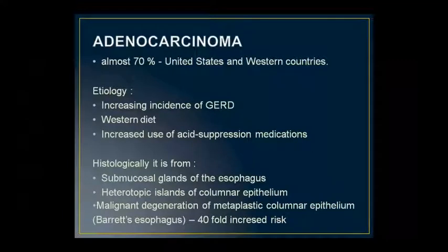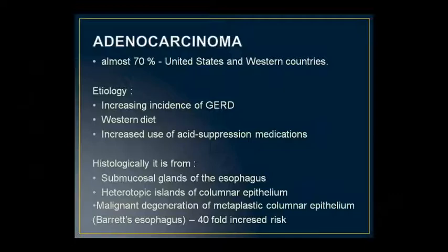Adenocarcinoma accounts for almost 70% of esophageal cancers in the US and western countries. Its etiology includes GERD — gastroesophageal reflux disease — western diet, and acid suppression. The use of acid-reducing medications, such as antacids, which reduce acid pain, can also increase the chances of developing adenocarcinoma.